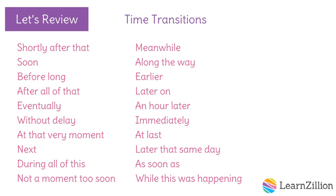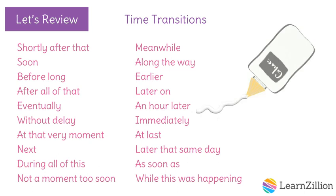All of these help the reader know when something is happening. Transitions are important — they are the glue that holds your story together. They help the reader understand how things go together and help organize the events in the story for your reader.